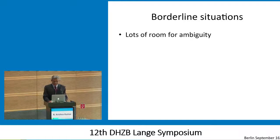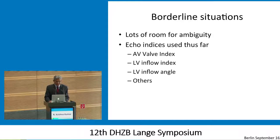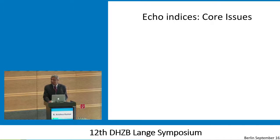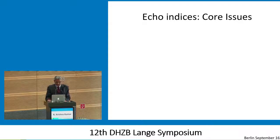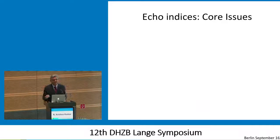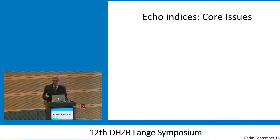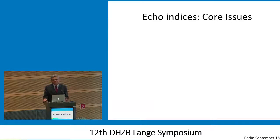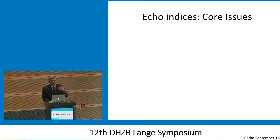There's lots of room for ambiguity. We've talked about echo indices that have been used thus far — AV valve index, the inflow index, the inflow angle, and others which are determined by ventricular volumes. The core issue with echo is that a lot of papers get written on echo indices, but not much gets translated into day-to-day practice. That's because it's not easy to standardize views. The exact same view has to be taken in every single patient, gains have to be adjusted in a very uniform way, and color flow signals have to have the right kind of scales — so it becomes very hard to have a reproducible standard.